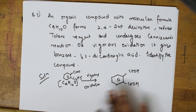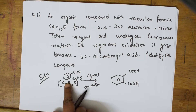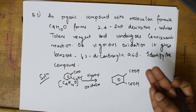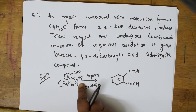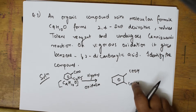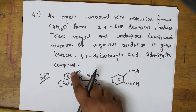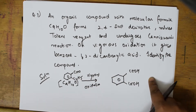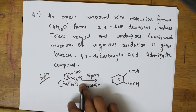Let us recall: the compound is an aldehyde because it forms a 2,4-DNP derivative, reduces Tollens reagent, and undergoes Cannizzaro's reaction. They specified 1,2-dicarboxylic acid, so positions 1 and 2 were chosen accordingly. The formula and product have both been written.